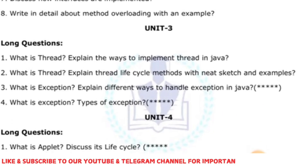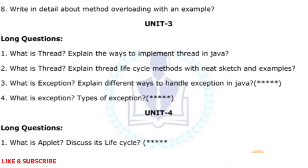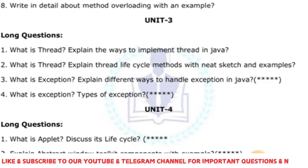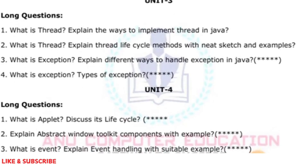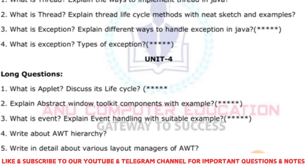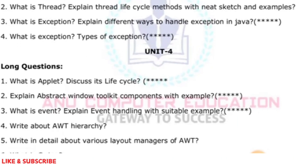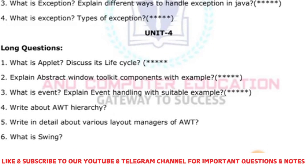When it comes to Unit 4, explain what is an applet and its lifecycle methods — init, start, stop — these are applet lifecycle methods. Cover AWT, the Abstract Window Toolkit, and its components. Explain event handling with a suitable example, the AWT hierarchy, and the various layout managers available. Also write about String. These are all very important questions in Java — please subscribe to my channel Anu Computer Education for further updates.